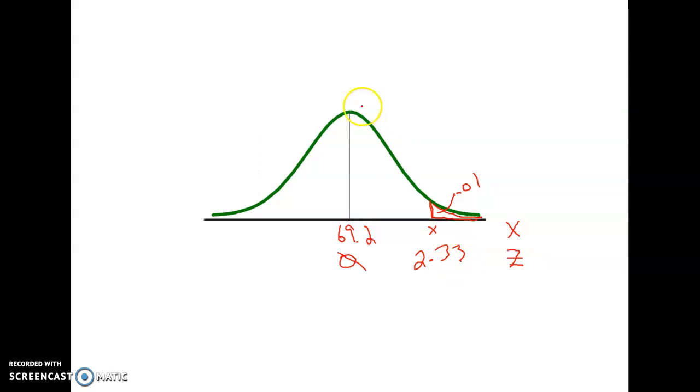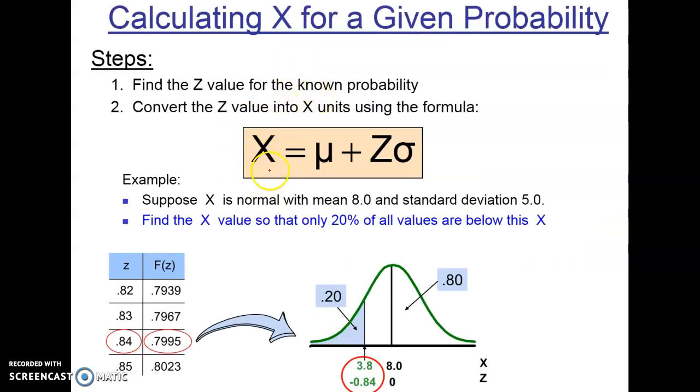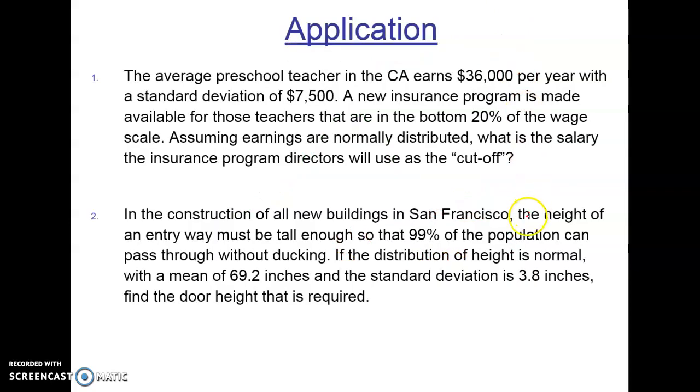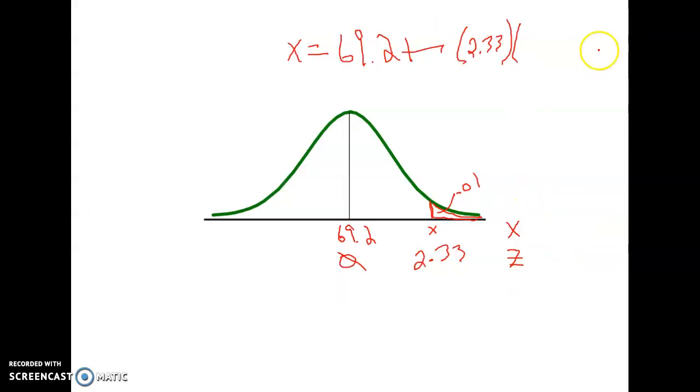Let's go back. We have 2.33. Now with that, we can use our formula. Remember the formula here? Our X value will equal the mean plus the Z times the standard deviation. Let's put our numbers in. So our X value will equal the mean, which we already know is 69.2, plus the Z score, which is positive 2.33, times the standard deviation, which we established at 3.8.